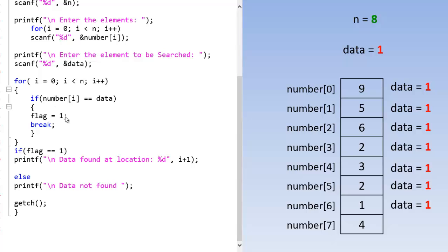Now we will set the flag 1. And we will come out of the loop because of this break statement. We will be no longer continuing this loop.